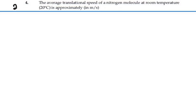Here's problem 21.4. The average translational speed of a nitrogen molecule at room temperature, 20 degrees Celsius, is approximately in meters per second.